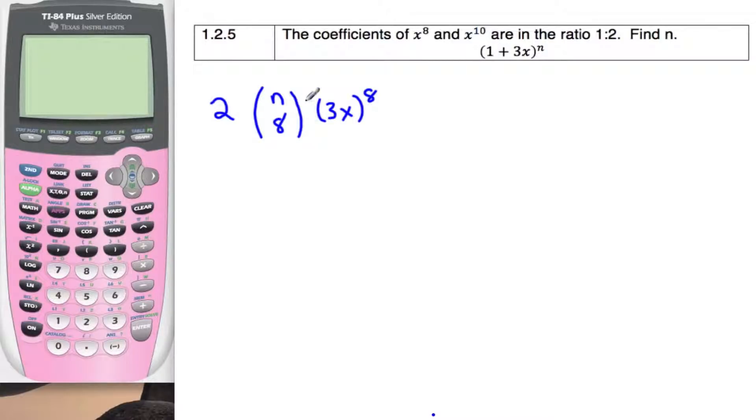We can ignore the 1 because 1 to the n minus 8, no matter what n is, it's just going to be 1. So this is going to equal n choose 10, 3x to the 10th.